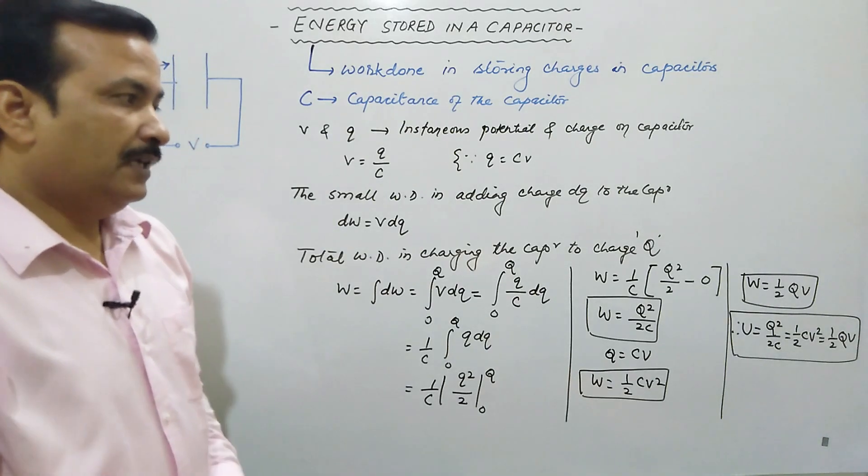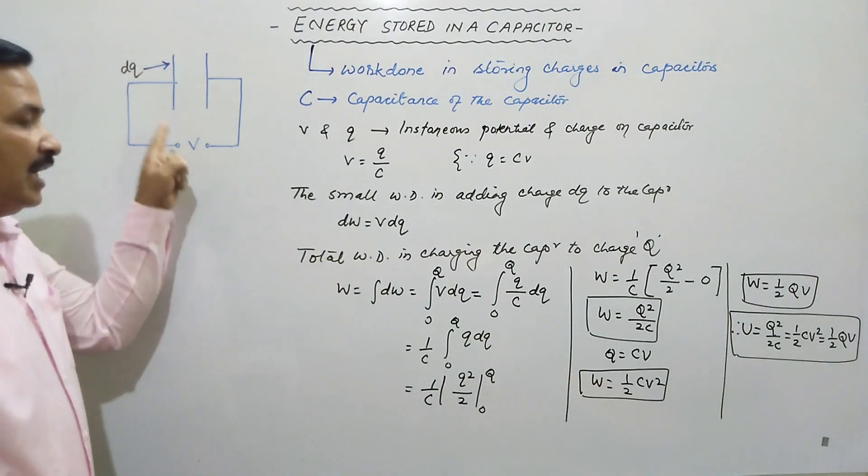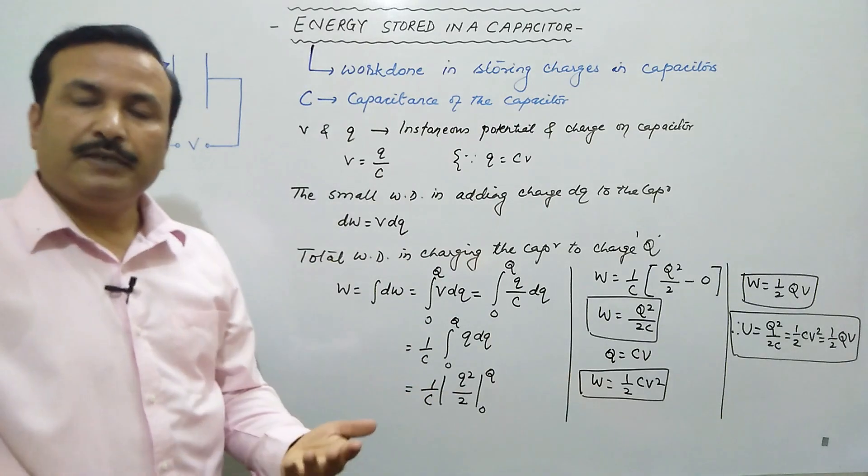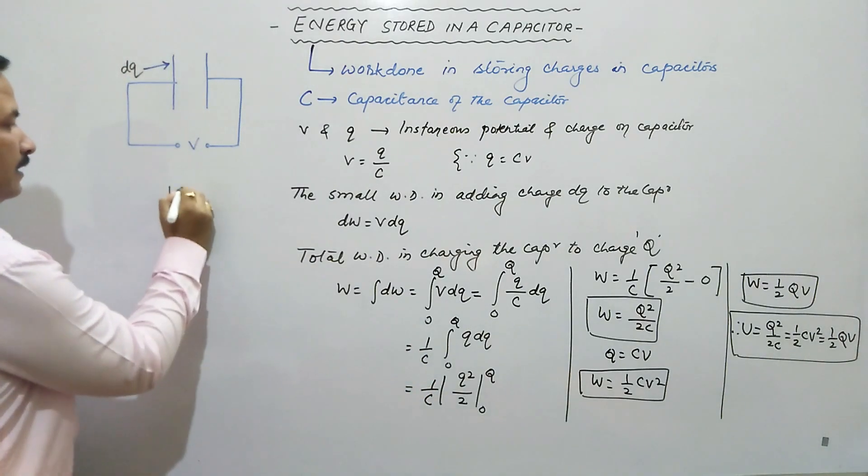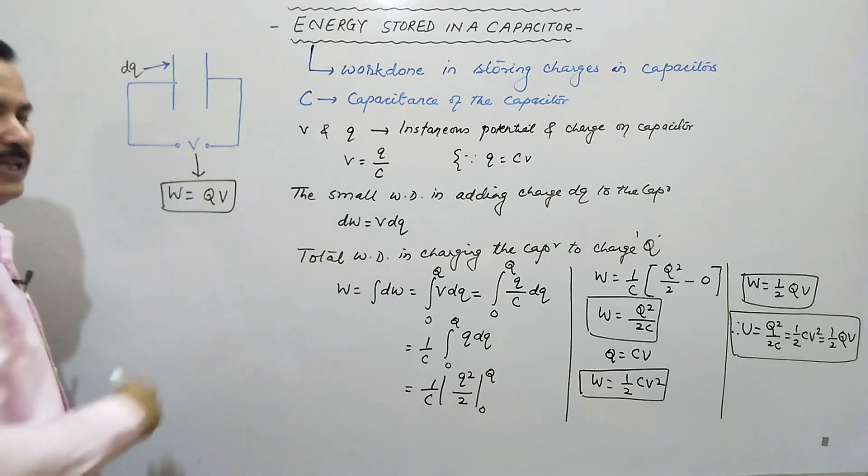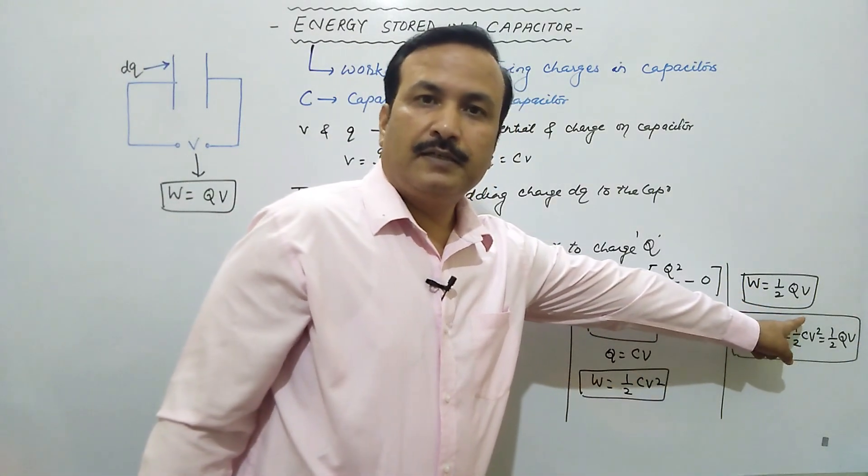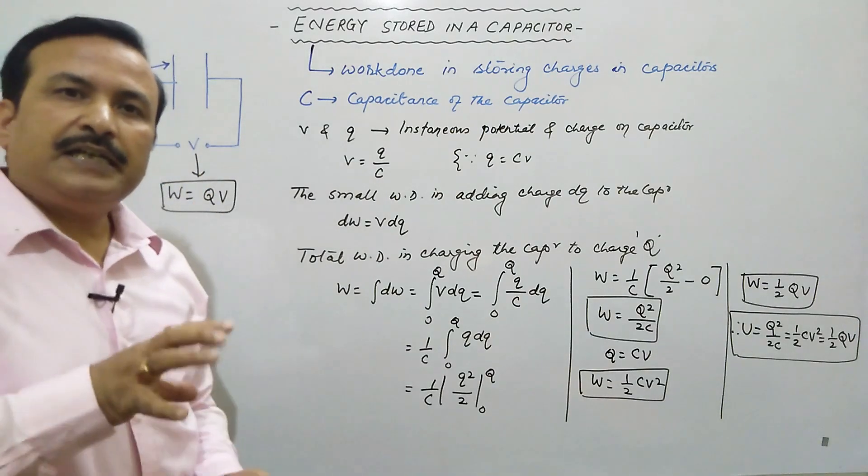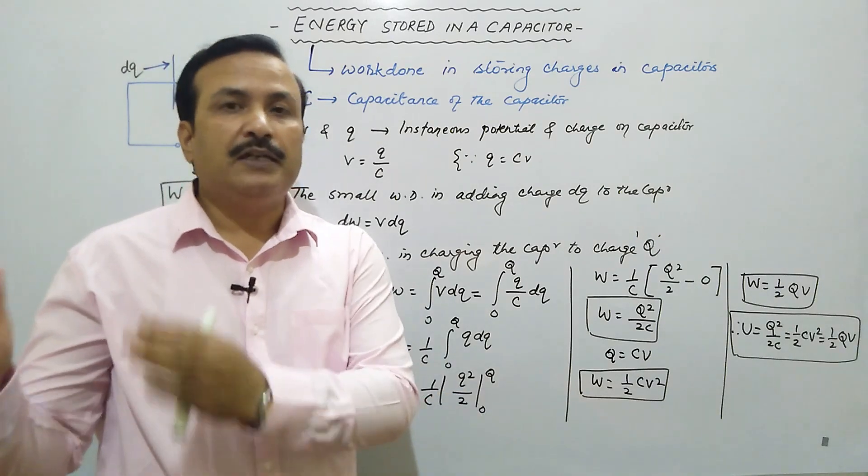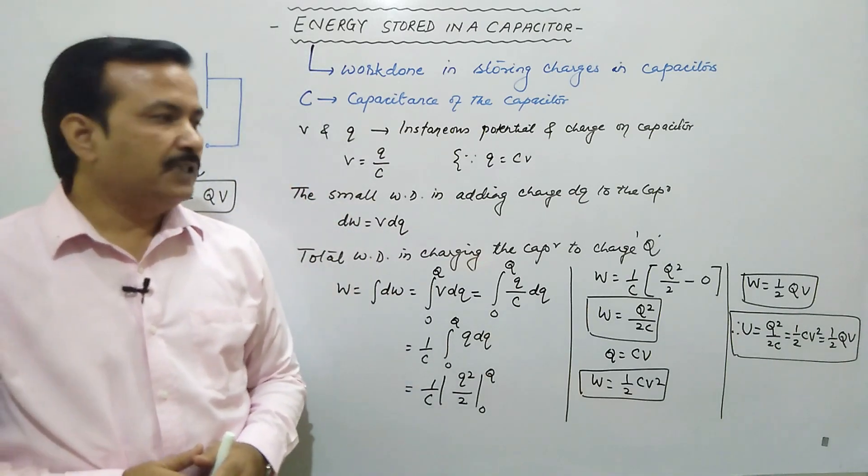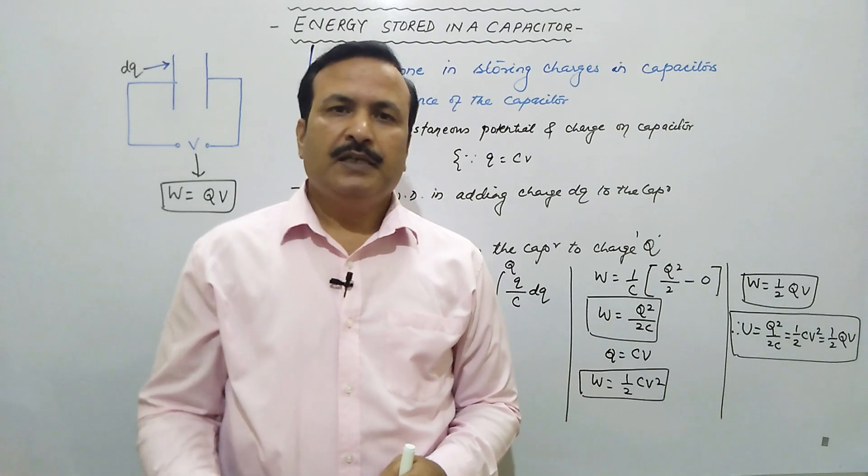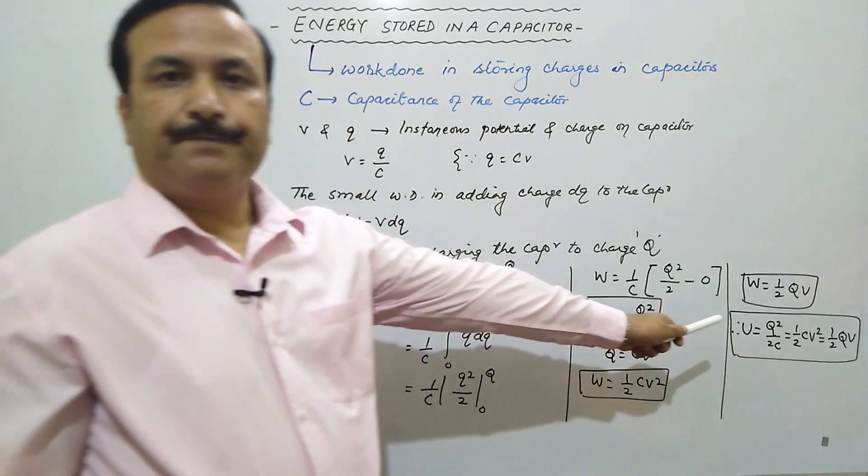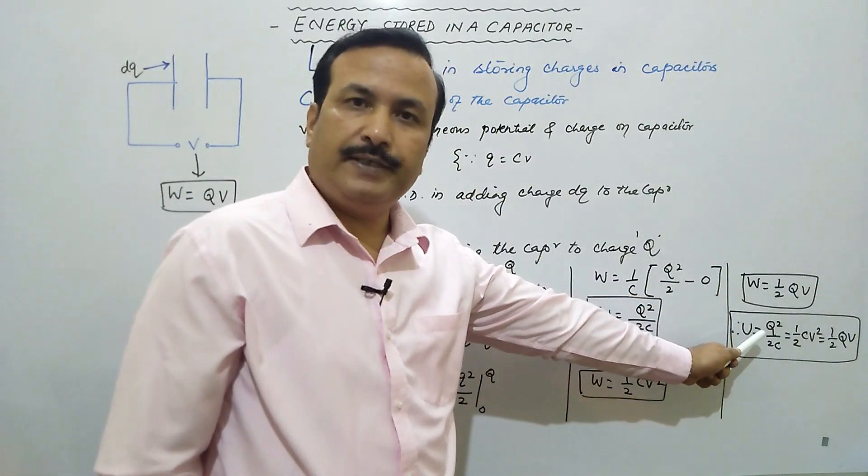Therefore, energy stored in the capacitor is Q square by 2C which is also equal to half CV square which is equal to half QV. This is the potential energy of the capacitor. Now if battery V is applied and we are giving charge capital Q, then work done should be potential into charge, W equals QV. So energy should have been QV, but here we are getting half QV. Where did the other half go? The other half is lost because always whatever energy we provide, the output is never that total amount of energy. Of course total energy is conserved, but what happens is some energy is transformed into heat or other forms. So ultimately here we are getting 50% energy. We are giving QV, here we are getting half QV.